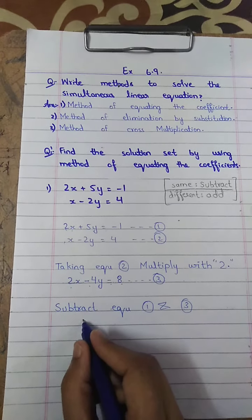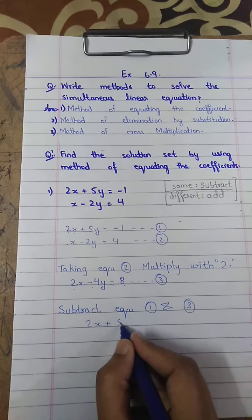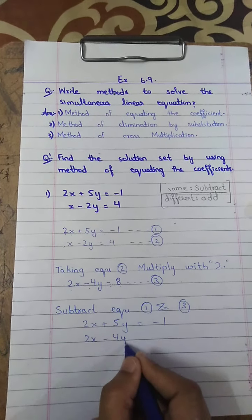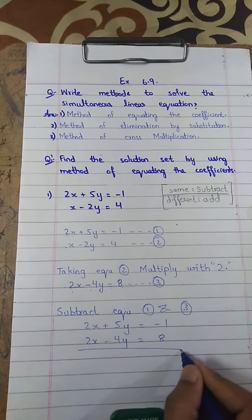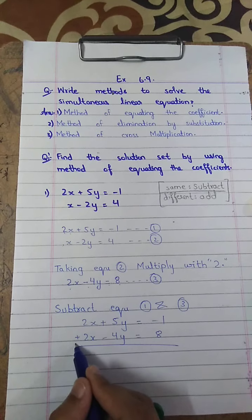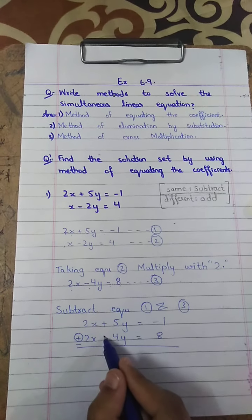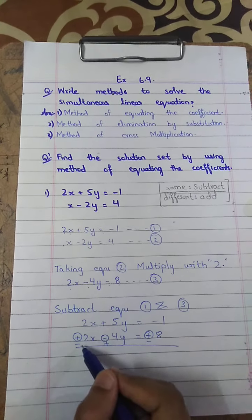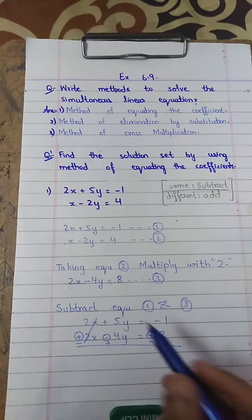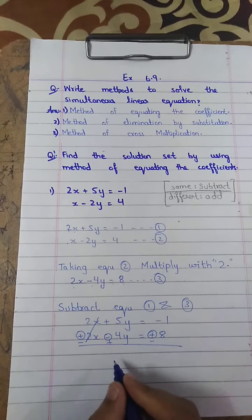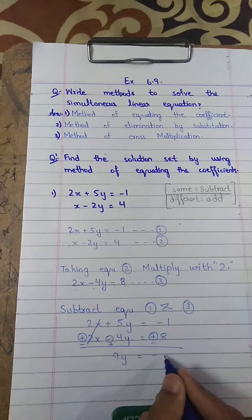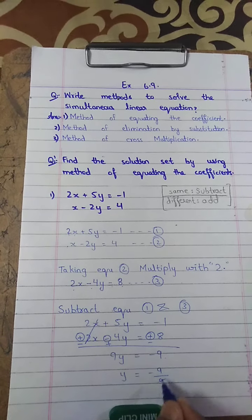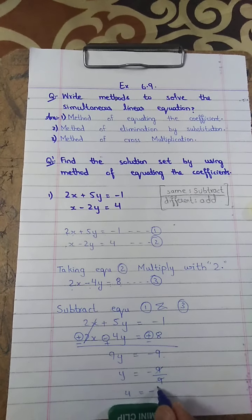We subtract: 2x plus 5y equals minus 1, and 2x minus 4y equals 8. In subtraction, the signs of the bottom equation change. So minus 2x cancels with plus 2x. Then 5y plus 4y gives 9y equals minus 9, so y equals minus 9 over 9, which gives y equals minus 1.